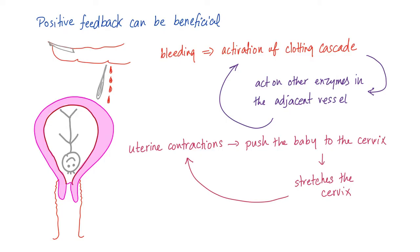Also, in uterine contractions during childbirth, the contractions push the baby toward the cervix. This stretching of the cervix leads to more contractions, more pushing, more contractions, more dilation of the cervix, and so forth. This is positive feedback, and it has a very beneficial result — the baby is born!